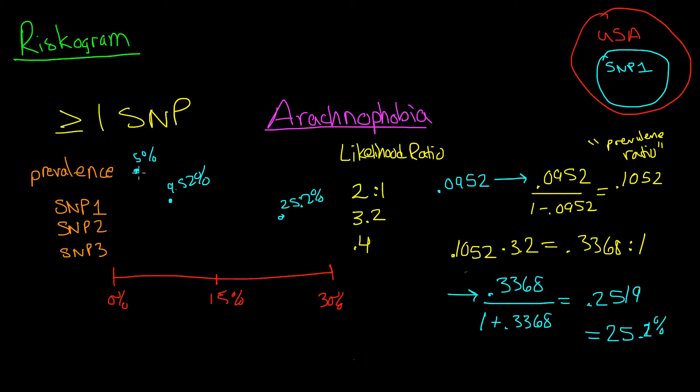And again, we can do our check by looking at the likelihood ratio, and it's 3.2 to 1. So that means about three people have it for every person that doesn't have arachnophobia. So it makes sense that if you have SNP2, you are more likely to have arachnophobia.